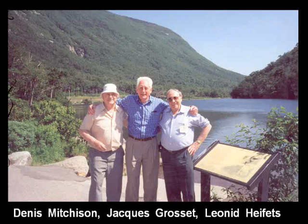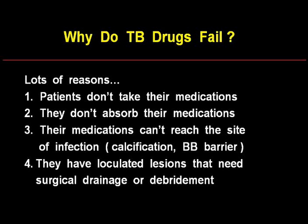Why do TB drugs fail? There are a lot of reasons, many of these familiar to you. The number one reason for patients to fail TB therapy is that they don't take their medication. Much has been written about directly observed therapy — that won't be the focus of today's discussion, but it still is the number one reason. Other reasons include: they don't absorb their medications; the medications can't reach the site of infection, including calcified lesions in the lung or because of the blood-brain barrier; or patients could have loculated lesions needing surgical drainage or debridement.